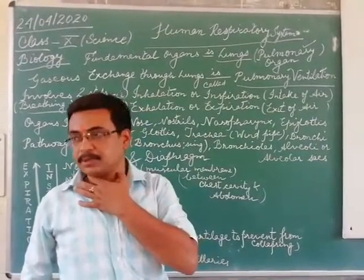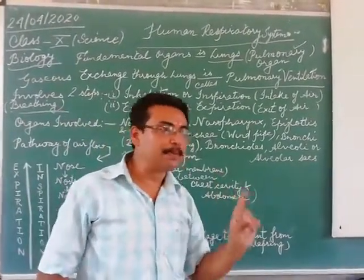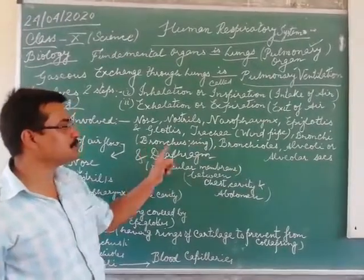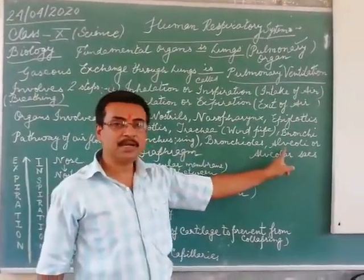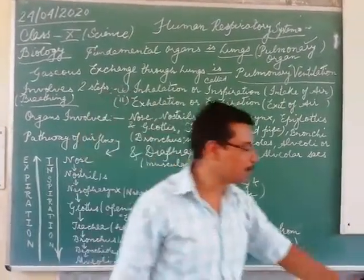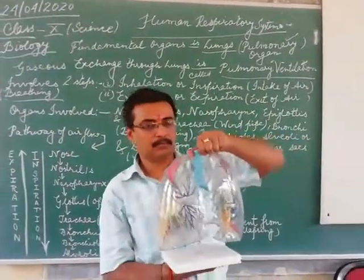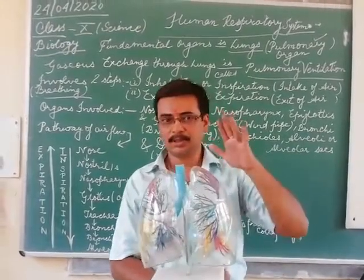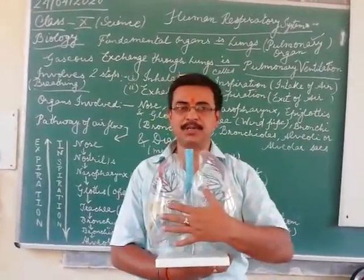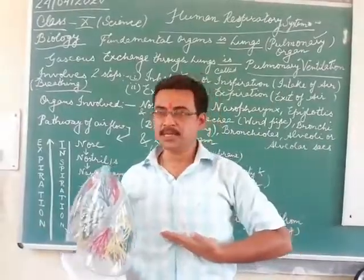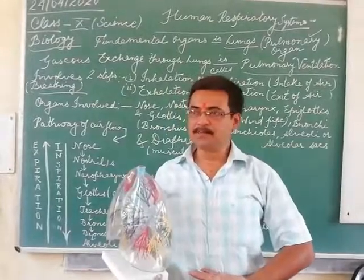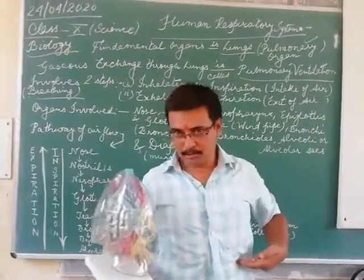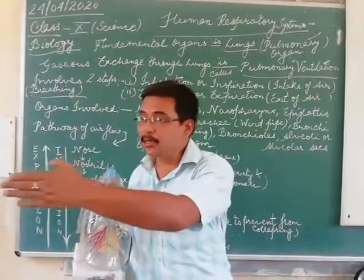So the rings of the trachea prevent it from collapsing. Then we have bronchi — each one is called a bronchus. Then we have bronchioles. Then we have alveoli. Lungs are situated in the chest cavity. Below the chest cavity is the abdomen. In between them there is a muscular membrane called the diaphragm.